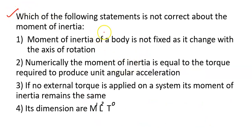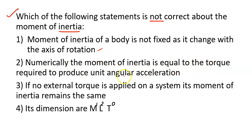Now we have another question: which of the following statements is NOT correct about the moment of inertia? Option 1: moment of inertia of a body is not fixed as it changes with the axis of rotation. Option 2: numerically, the moment of inertia is equal to the torque required to produce unit angular acceleration. Option 3: if no external torque is applied on a system, its moment of inertia remains the same. Option 4: its dimension is ML².